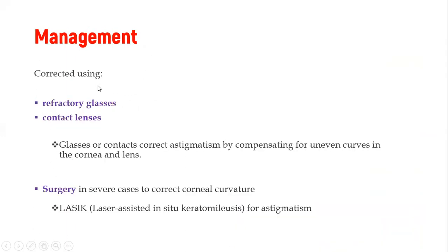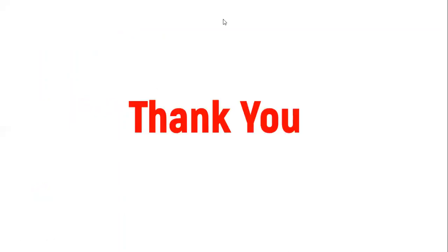So management is quite simple. Basically, refractory glasses or contact lenses might be used. So the purpose of these other lenses or glasses is to compensate for the uneven curves. So the glass will actually compensate for that. That is after they have done the diagnosis and seen where exactly we are having that unevenness. If it is an extreme case of astigmatism, then surgery is done on the cornea using the LASIK surgical intervention to actually try and reinstate the curvature of the cornea.